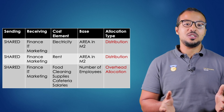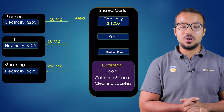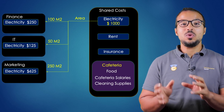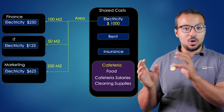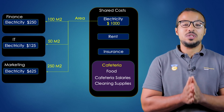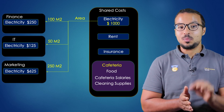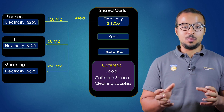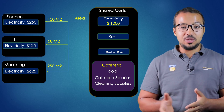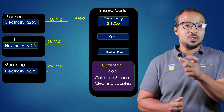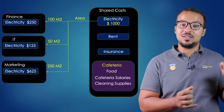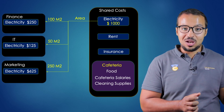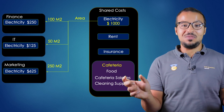The electricity expense posted to the shared expenses cost center is allocated to the different departmental cost centers. When a manager generates a report for their department, they want to see a line called 'electricity expense' — the same general ledger account and the same cost element that was in the shared expenses cost center, visible in their receiving cost center. This is distribution.